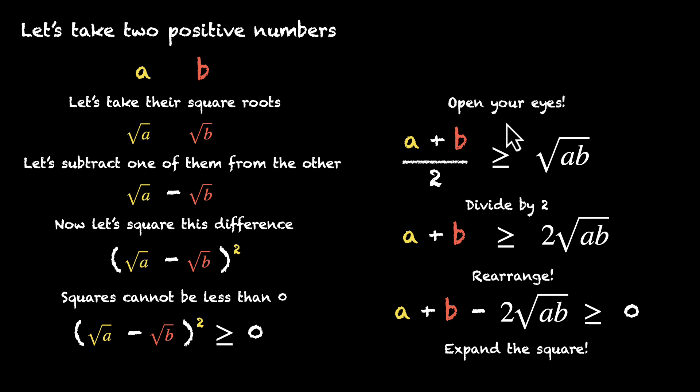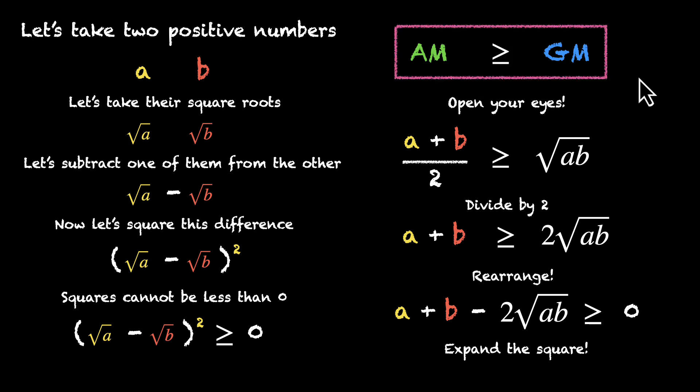And now we can open our eyes. We can see that on the left side, we have the arithmetic mean, and on the right side, we have the geometric mean. We have proved that for any two positive numbers a and b, arithmetic mean is always greater than or equal to geometric mean. That's a very powerful result. Let's solidify our understanding and figure out when these two are equal, and when is AM greater than GM.